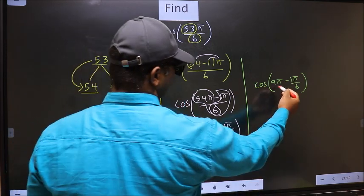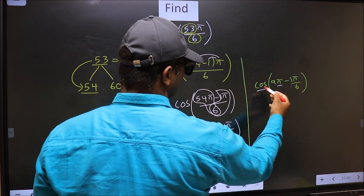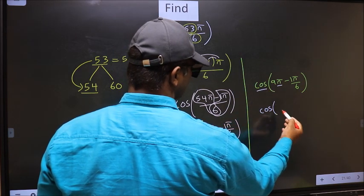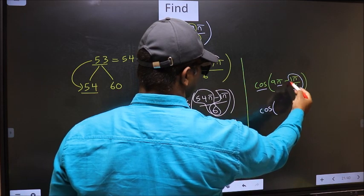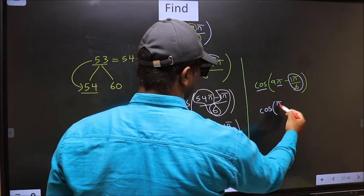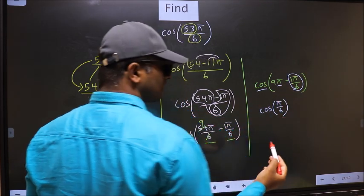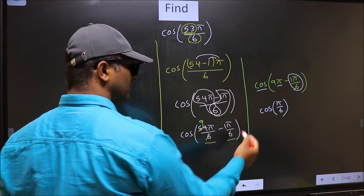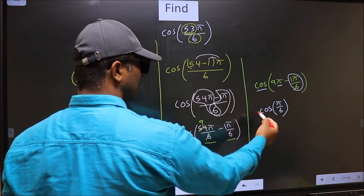Here we have π, so cos is not going to change. It will remain cos. And inside, we get this angle π/6. Now, the question arises, will we get plus or minus?